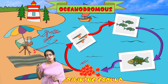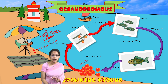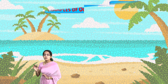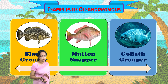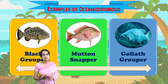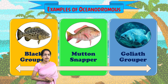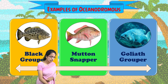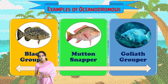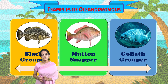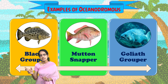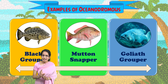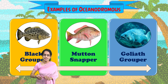Oceanodromus fishes complete their life cycle in the ocean. Granions differ in that they lay eggs deep within the beach soil and are governed by spring tides. Good examples of Oceanodromus include Goliath Grouper, Black Grouper, and Mutton Snapper. To summarize, we have covered Amphidromus, Oceanodromus, and Potimidromus species, alongside Catadromus and Anadromus, both of which are Diadromus fishes covered in a separate lecture.